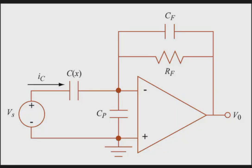We are going to analyze this circuit which has an amplifier with gain A. It is a difference amplifier — it amplifies the difference between the two inputs applied to the negative pin and the positive pin. To the positive pin we have applied ground potential, and to the negative pin we have applied the signal source VS. Between the positive and negative inputs there is a capacitor CP, which is a parasitic capacitance due to the amplifier's internal structure.